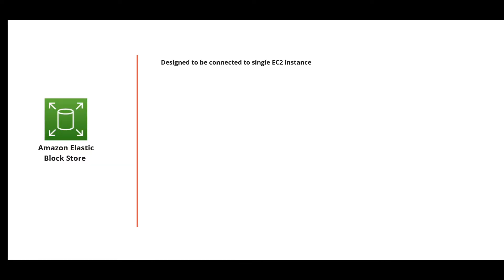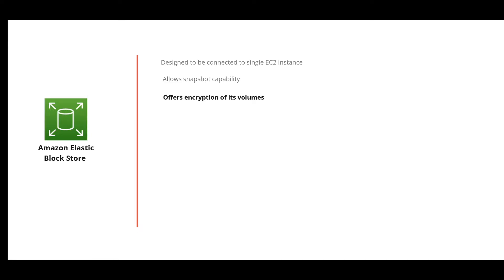On a high level, EBS is block storage designed to be connected to a single EC2 instance. A single volume is attached to each instance, and it enables redundancy within an availability zone, providing the required durability. Users can take snapshots of data — so if you want to periodically back up a block device attached to an EC2 instance, EBS provides that facility. It also supports encryption, though this is not enabled by default and must be manually configured.